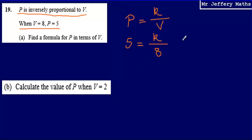So solving this equation, getting rid of the divide by 8 by multiplying by 8, that leaves us with 40 is equal to K. This then allows us to write a formula. So P is equal to K over V. We found out that K is 40, so we can say that P is equal to 40 over V.